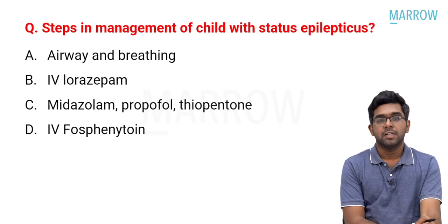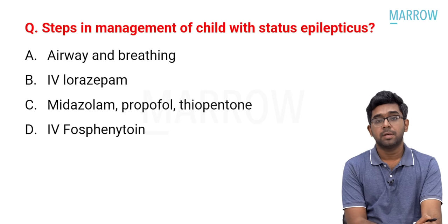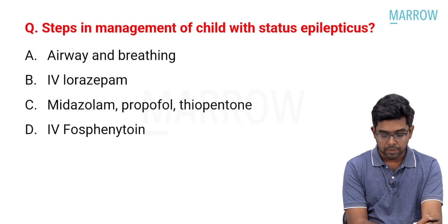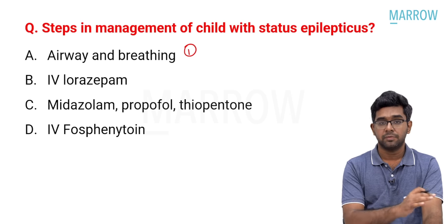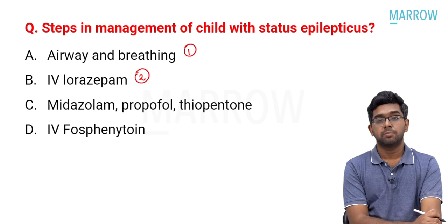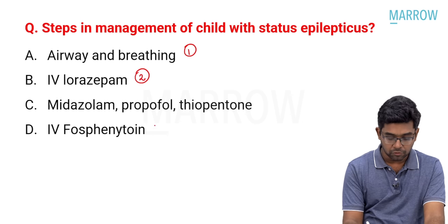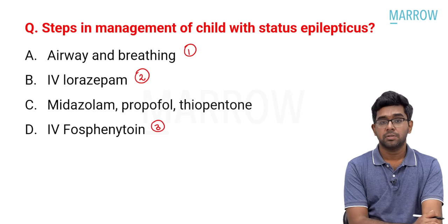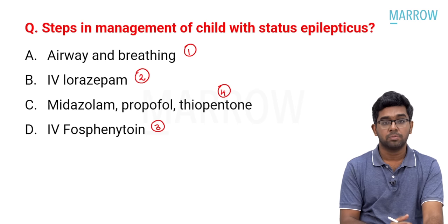Steps in the management of a child with status epilepticus. The order is: first, airway and breathing — the ABCs — airway, breathing, circulation, and neurological disability assessment while establishing IV access. Second, give intravenous benzodiazepine — IV lorazepam is the second step. Third, if seizure is not controlled, give IV phosphenytoin. Finally, if still not responding, give infusions of midazolam, propofol, or thiopentone.